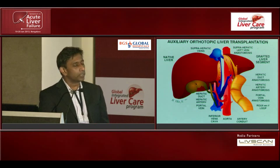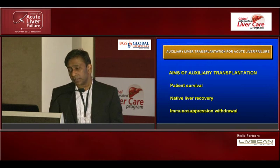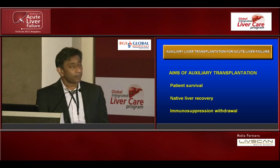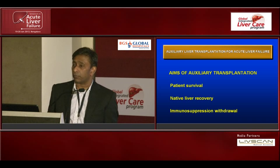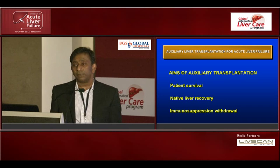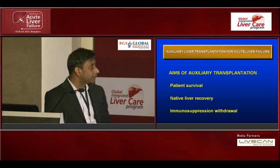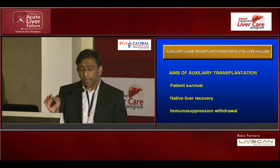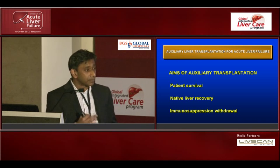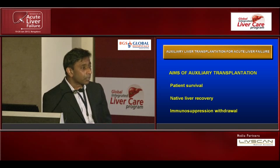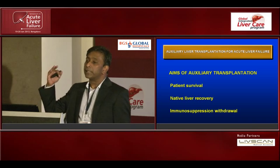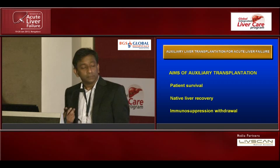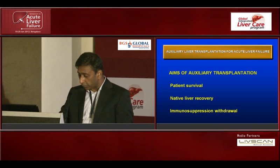The native liver is left behind and you put an auxiliary graft. The indication is acute liver failure, which is the most common and probably the most exciting indication. When you do an auxiliary liver graft, you get patient survival because they've got enough liver mass. Then you wait for the native liver you have left behind to recover, and once it recovers, you can aim to withdraw immunosuppression. This is more important in our country than anywhere else in the world — withdrawal of immunosuppression reduces cost, which is a major issue here.